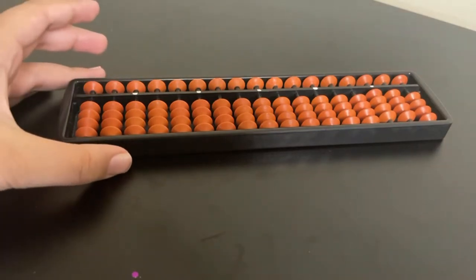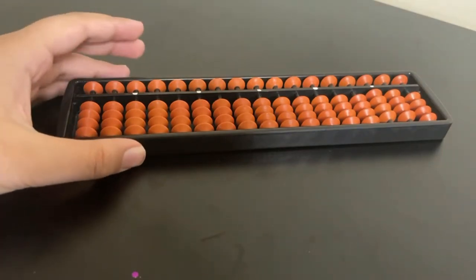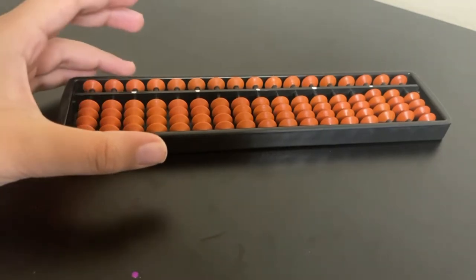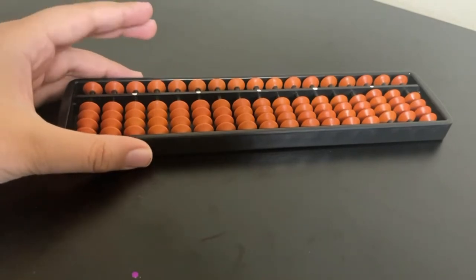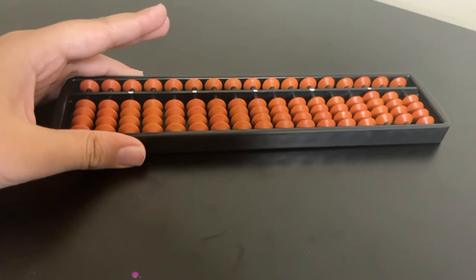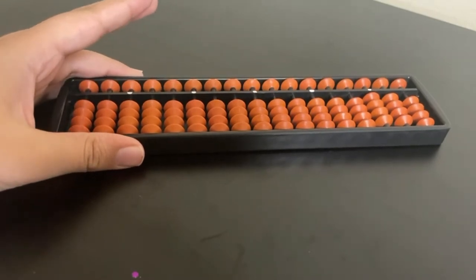And we're going to take our thumb, index finger, pinky, put it on the bottom, and then the thumb here, and then the pointer finger and middle finger should be pointing out just like this.